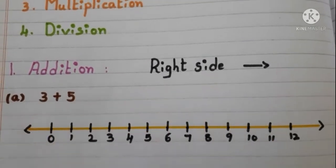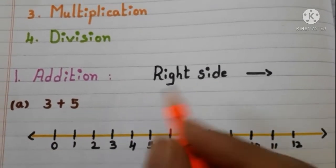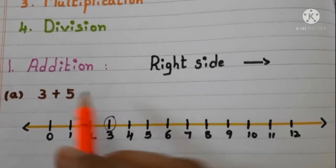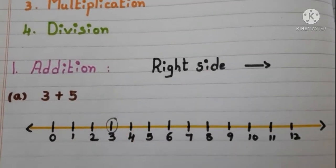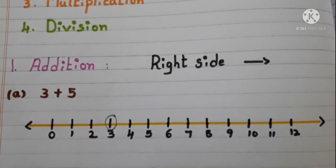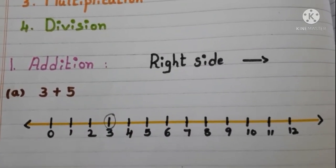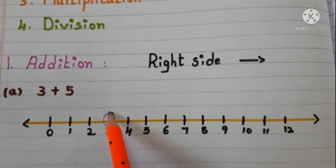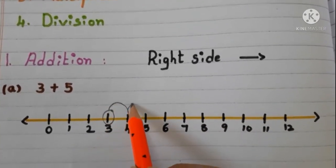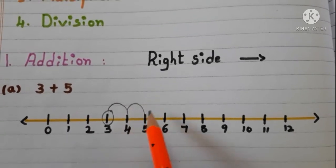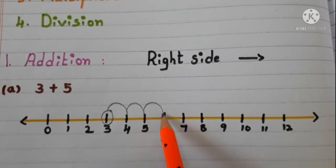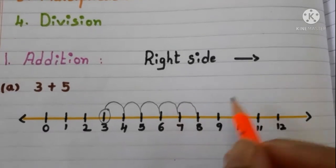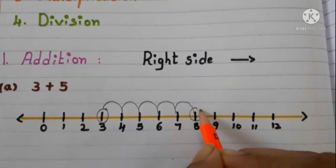What is the second number? 5. So we have to move five steps to the right side on the number line. See: 1, 2, 3, 4, 5. So the answer is 8.